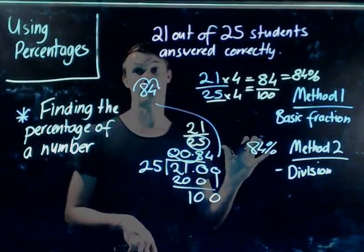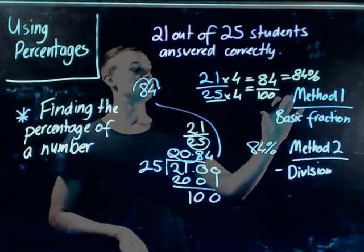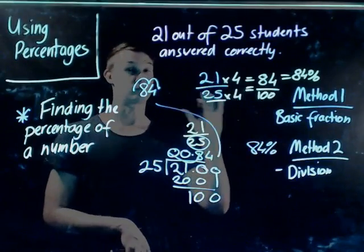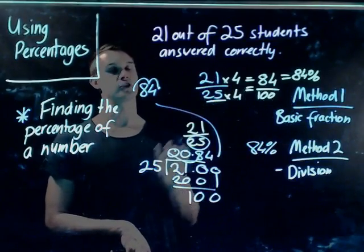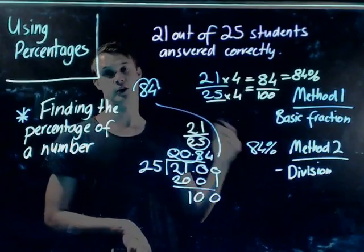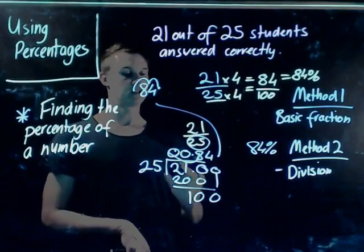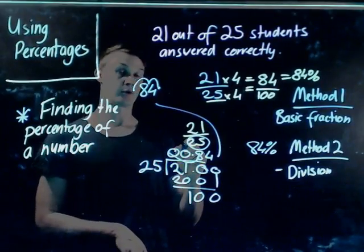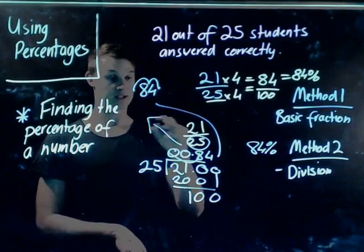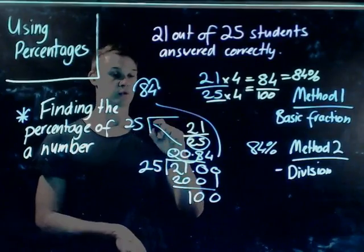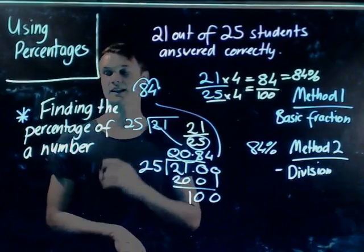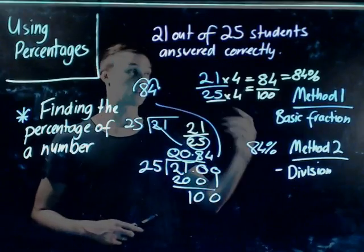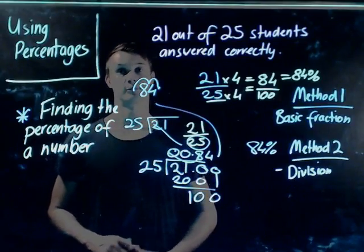So you're going to need to work through both methods as we go through this unit. You can either break the fraction down into a basic fraction—remember, only if the denominator is able to be easily converted to 100. If not, then you just need to do the division process that we've just shown you. So the bottom denominator goes outside the question and 21 goes on the inside. So that's how you find the percentage of a number, and we'll make sure we work on this throughout class. Thanks boys.